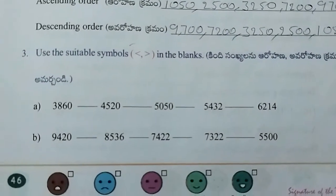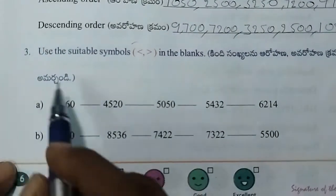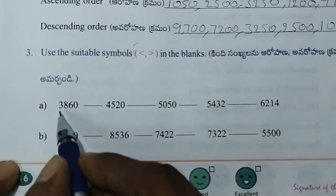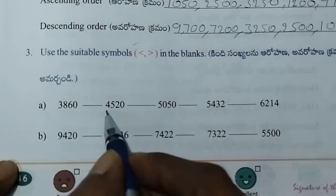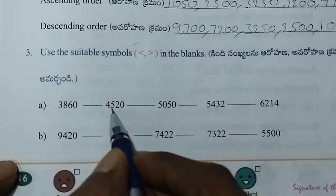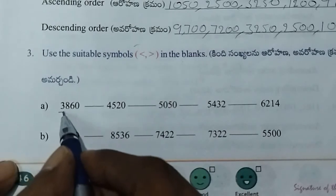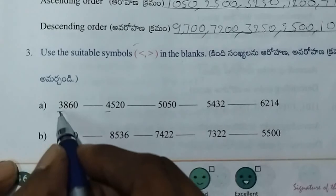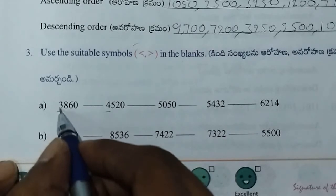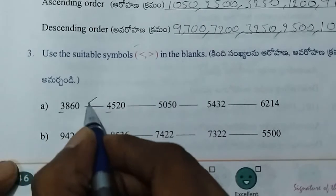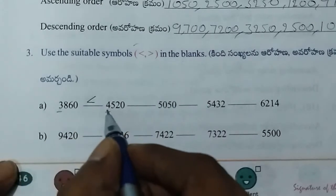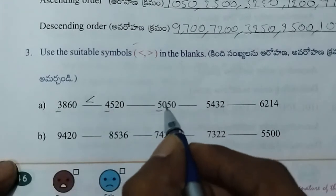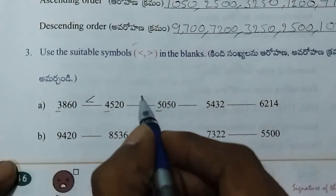Now use the sort of symbol — less than or greater than. Cut short: 3,860 and 4,520. The 1000s are 3,000 and 4,000, so 4,000 is bigger. And 1,050 is less than 4,520, since 4,000 is bigger.